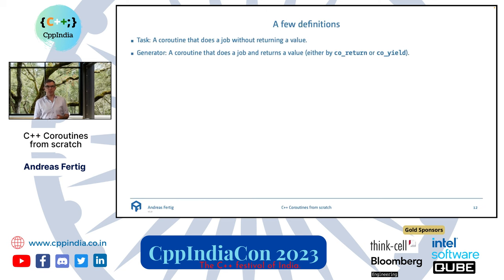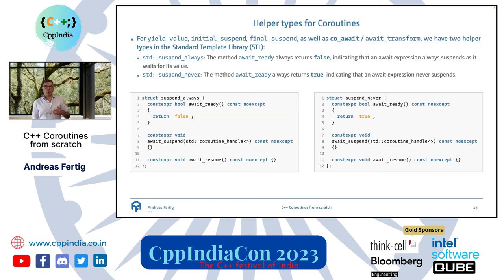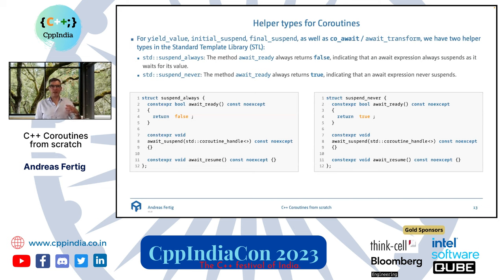Two definitions for the rest of the talk: a 'task' is a coroutine that does work without returning a value; a 'generator' is a coroutine that does work and returns a value, either via co_return or co_yield. The two helper types suspend_always and suspend_never differ only in their await_ready return value — suspend_always returns false, suspend_never returns true.